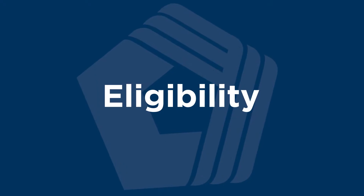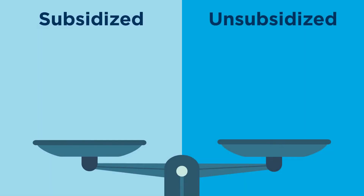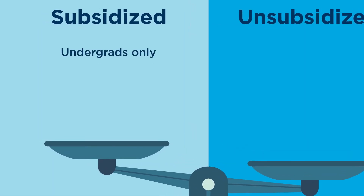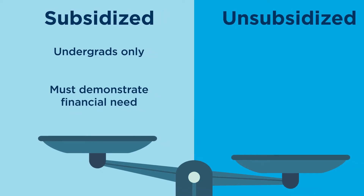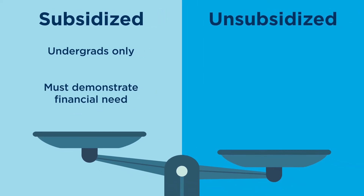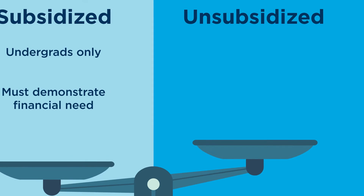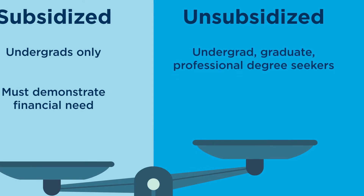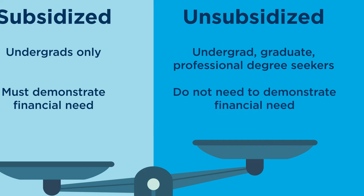The first is eligibility. You can only apply for a subsidized loan if you're an undergraduate, and you must demonstrate financial need. On the other hand, unsubsidized loans are open to undergraduate, graduate, and professional degree students. And to qualify, you only need to meet basic requirements for federal student aid.